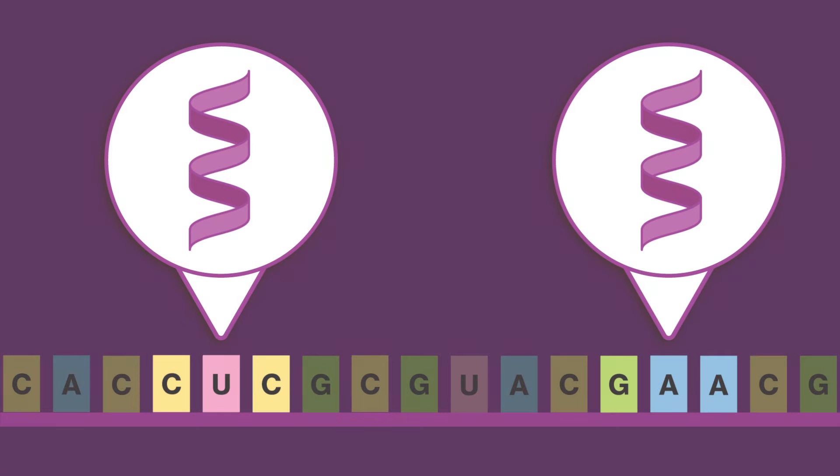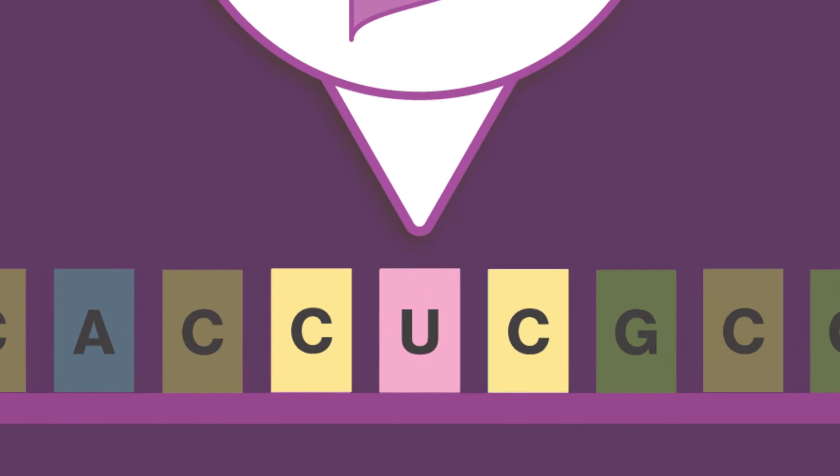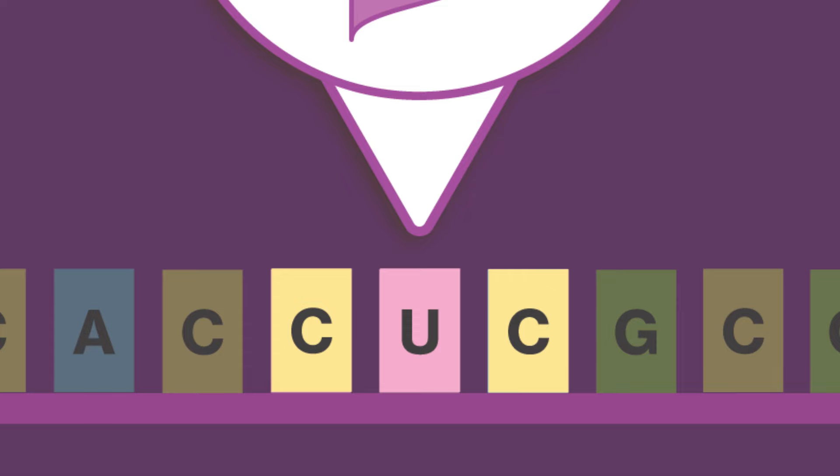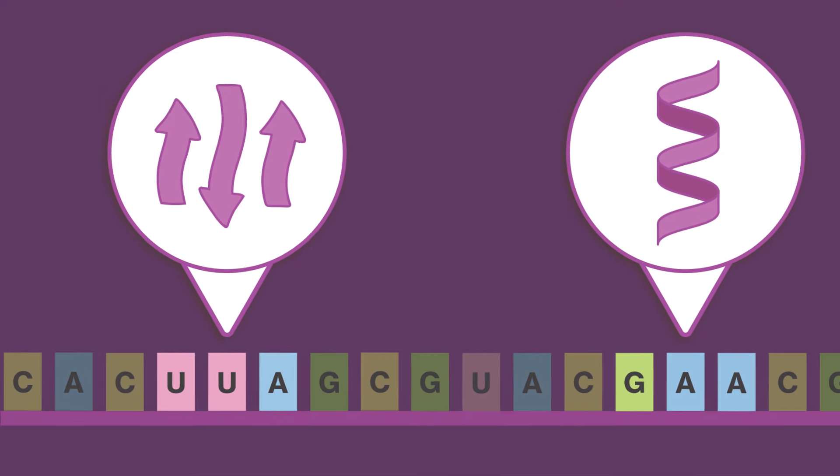So while it may be tempting to pump a gene full of synonymous common codons to increase the translation rate, it's important to remember that both rare and common codons exist in DNA for a reason, and pacing is key to winning the race to translate.